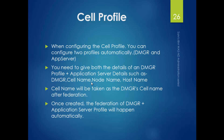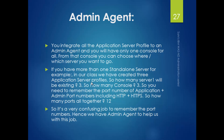The fourth profile type is the cell profile, which allows you to configure two profiles automatically. It is a collection of a DMGR and an application server profile. You provide details such as DMGR name, cell name, node name, and hostname, and the federation between the DMGR and application server profile happens automatically upon creation.